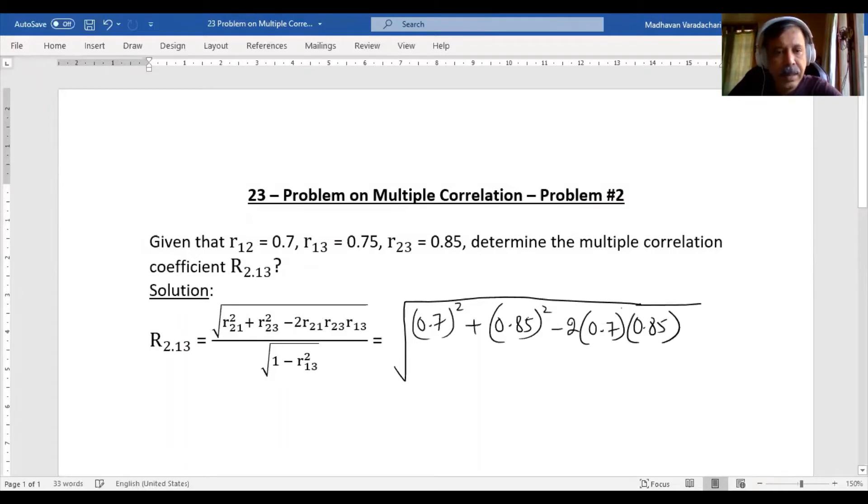...and then r13 is 0.75, the whole thing divided by 1 minus 0.75 squared. Substituting all these values...